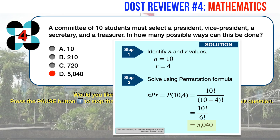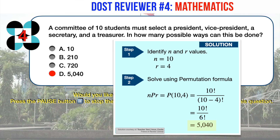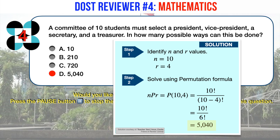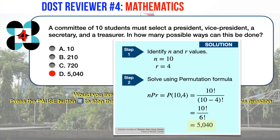In other words, there are 5040 different ways to select 4 positions from a committee of 10 students.